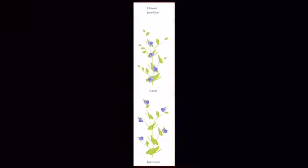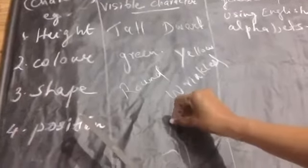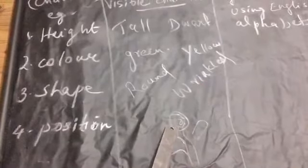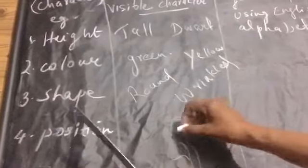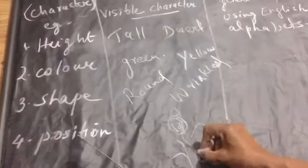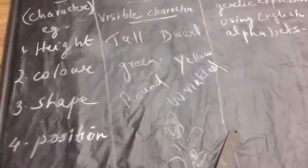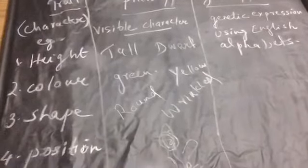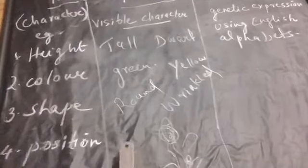Now, what about position? Some flower buds are born on the extreme tip of a plant — that is a terminal bud. Whereas in the axil, the angle formed by the leaf and the stem, a bud forms — that is called an axial bud. So we are talking about terminal bud and axial bud, about the position of the flower bud. Axial bud and terminal bud are the two phenotypes of the trait position of the flower bud in a plant.